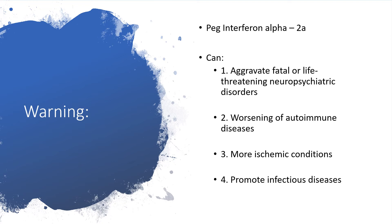Warning: PEG interferon alpha 2a can aggravate fatal or life-threatening neuropsychiatric disorders. From the adverse reactions we discussed — aggression, depression, mania — it could lead to fatal neuropsychiatric outcomes. It could worsen autoimmune diseases, make ischemic conditions worse, and promote infectious diseases. We've already learned that neutropenia and lymphocytopenia will occur, leading to overwhelming or increased bacterial infections.